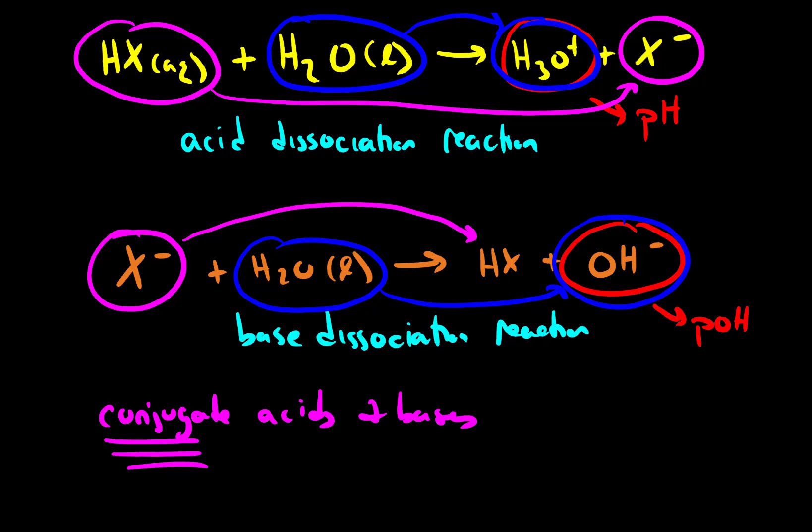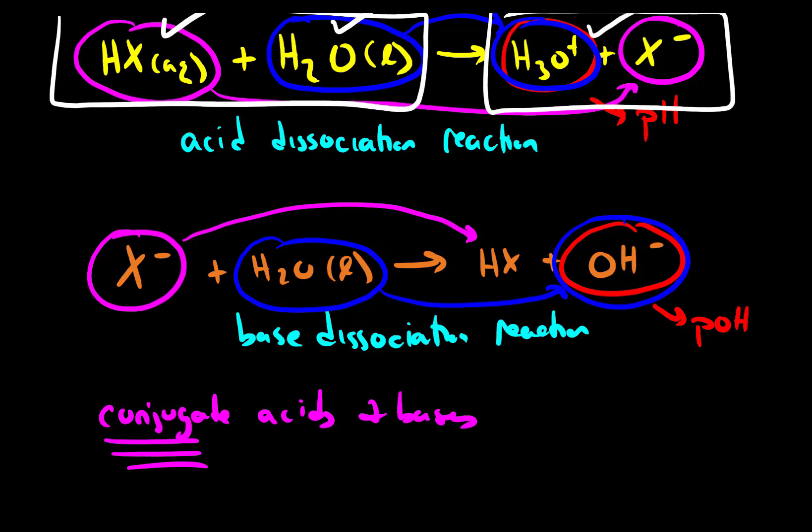So when we think about these acid and base dissociation reactions, we always have pairs of acids and bases. On the reactant side, I have an acid and I have a base. On the product side, I have an acid and I have a base. On the product side, I have a base and I have an acid.